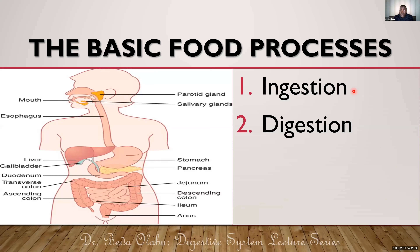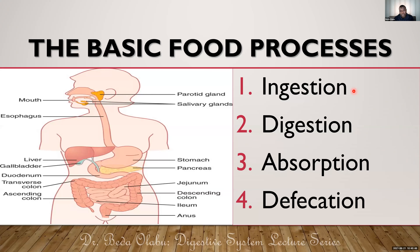The stomach is also another site of digestion, though not the primary site. Once food has been digested, it is absorbed. Absorption of nutrients primarily takes place in the ileum. Water and minerals are absorbed in the colon. After absorption, whatever remains is called stool, and that undergoes the last process — defecation, which is the reflex elimination of waste.